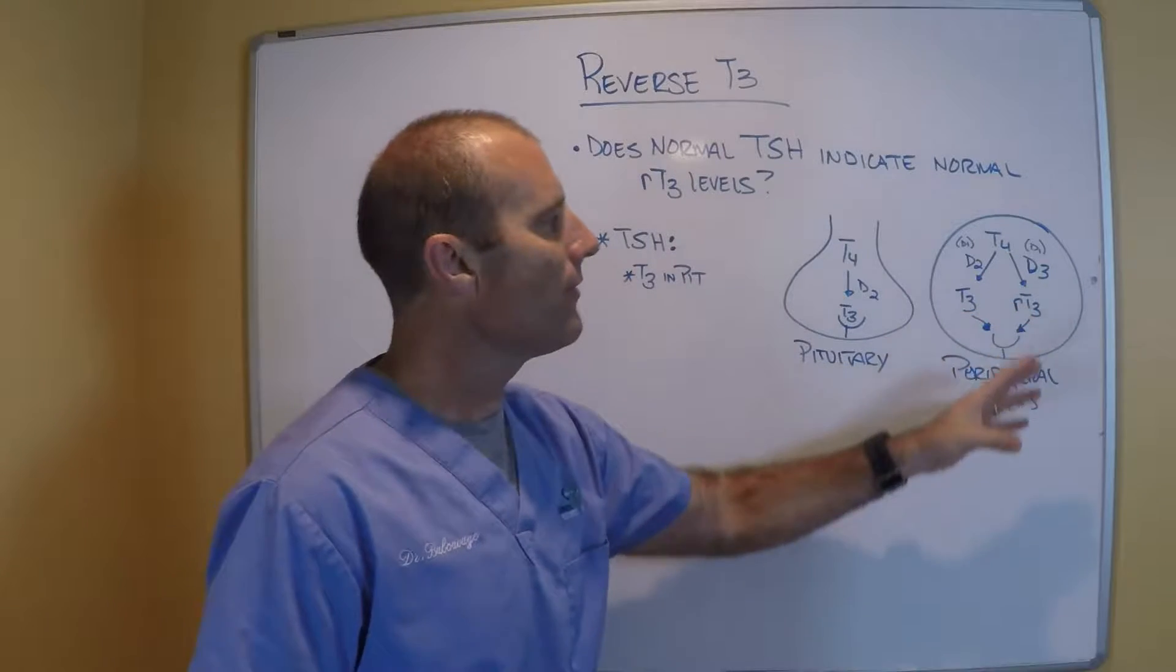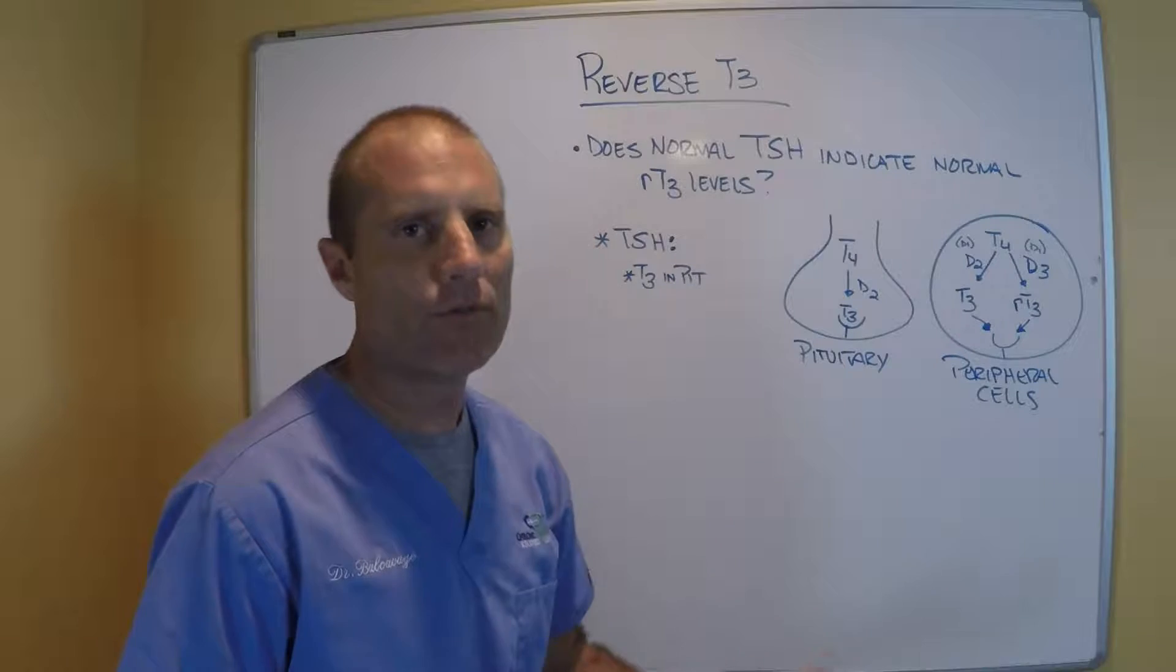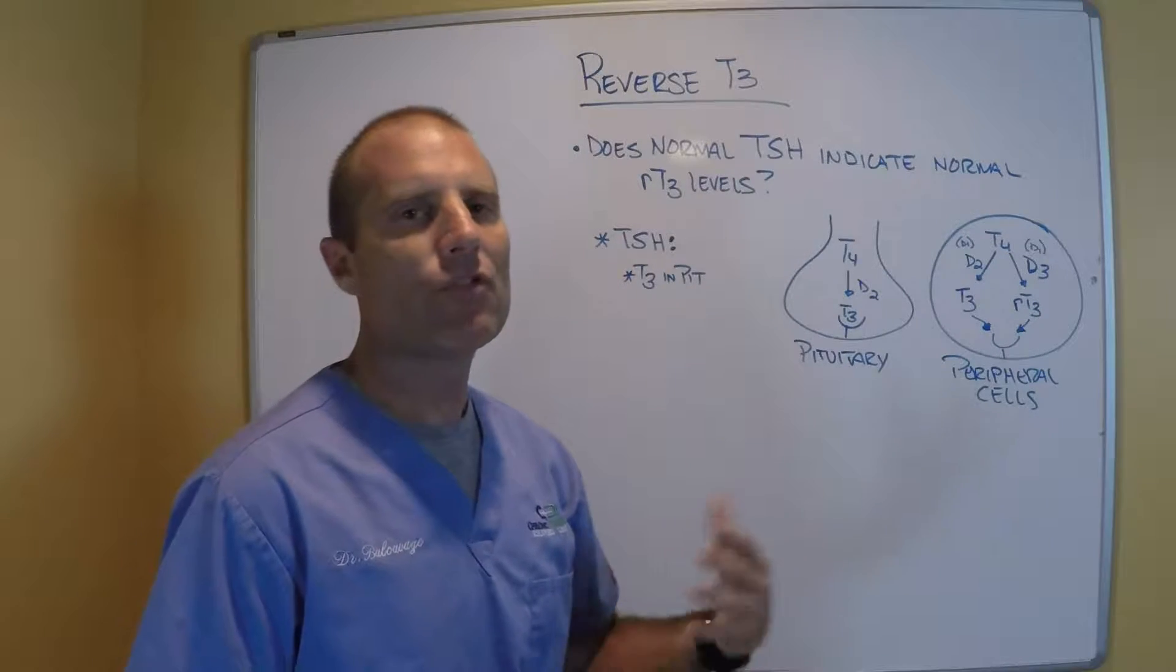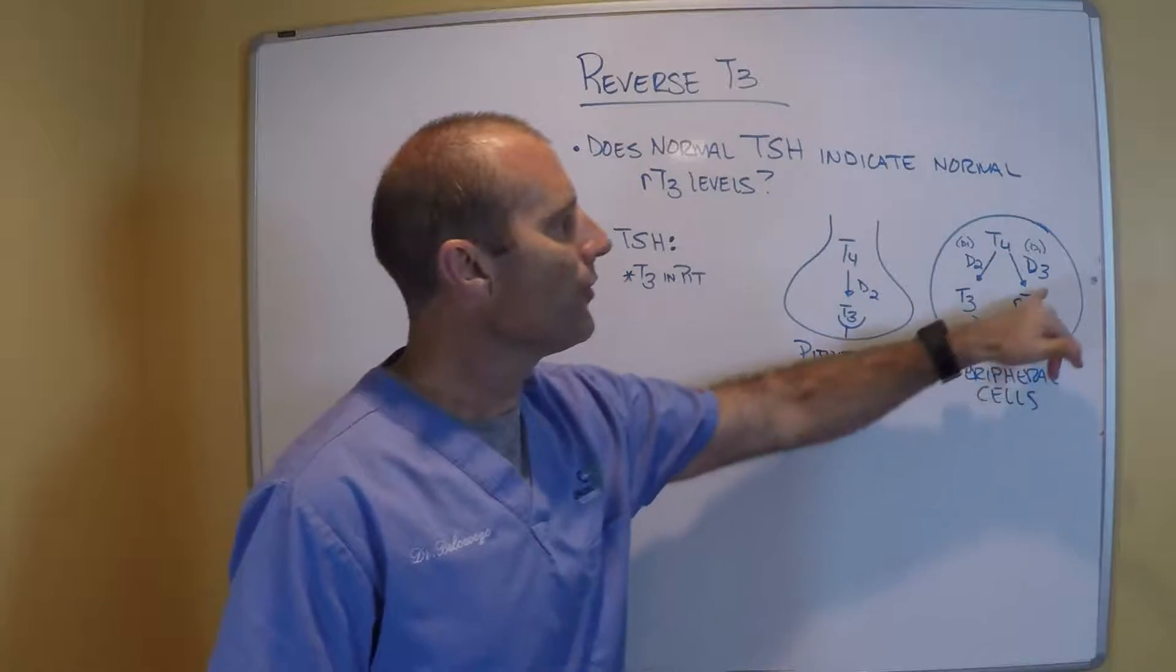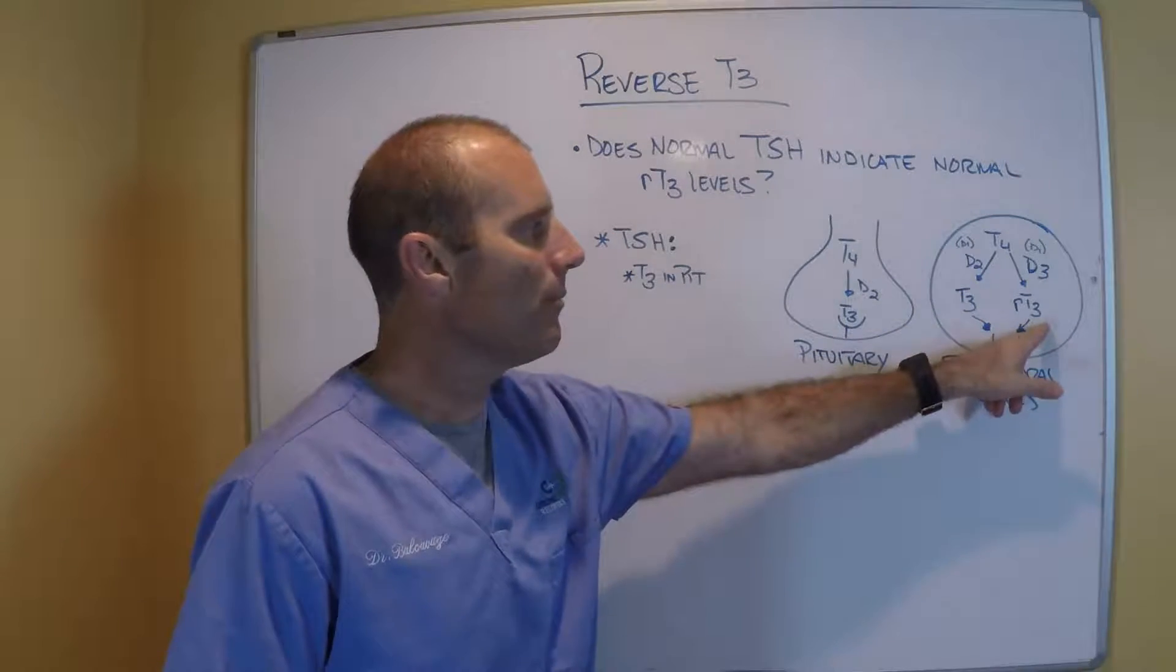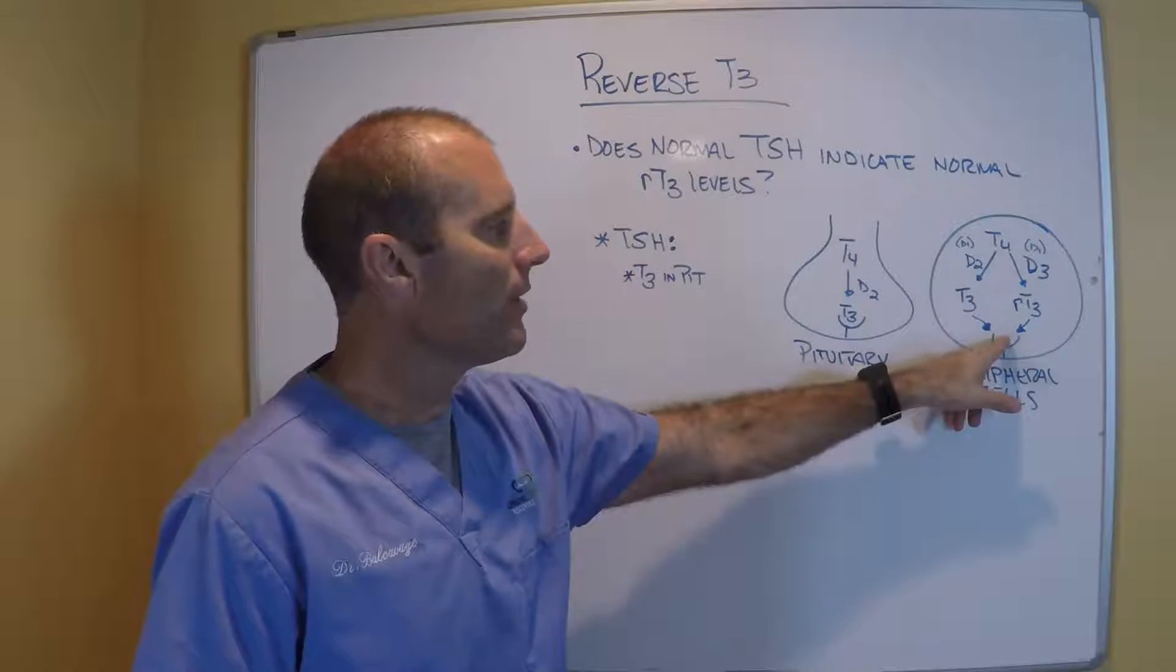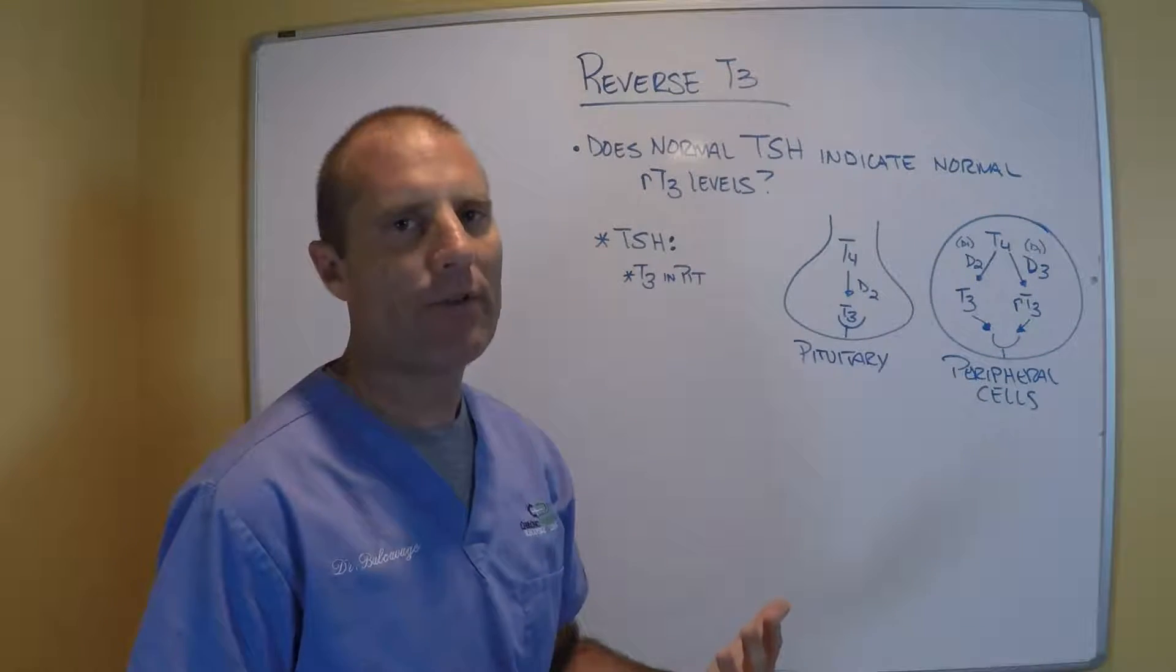And so if we have situations like calorie restriction, or inflammation, or insulin resistance, or some type of stress response, in the peripheral tissues D3 may be upregulated. In that case we're going to make way more reverse T3, and that's going to bind to receptors and cause hypothyroid symptoms.